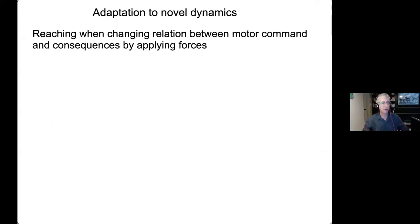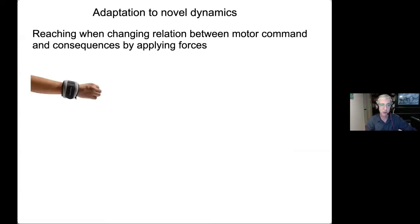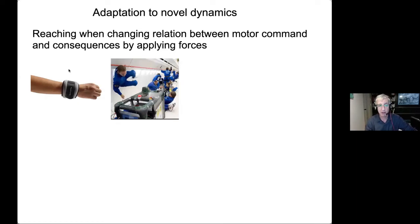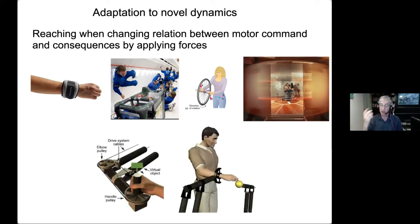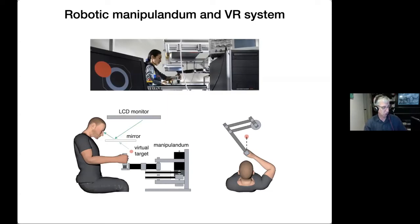Adaptation to novel dynamics requires us to change the relation between the motor command and the consequences by applying forces. You could do it by putting a weight on the arm or holding an object. It's been studied by taking people to space in zero gravity, asking people to hold gyroscopes, or being in rotating rooms. The trouble with all of these is they don't have the precise control we'd like for testing experimental ideas.